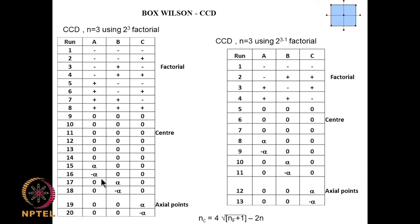The number of center points is determined by the formula: NC = 4√(NF + 1) − 2N, where NF is the number of factorial experiments and N is the number of factors. For a 2^3 full factorial with NF = 8: √(8+1) = √9 = 3, so 4×3 = 12, minus 2×3 = 6. Therefore we need 6 center point experiments.